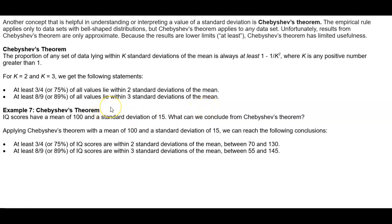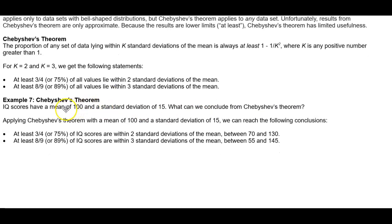For example 7 in Chebyshev's theorem, IQ scores have a mean of 100 and a standard deviation of 15. What can we conclude from Chebyshev's theorem?